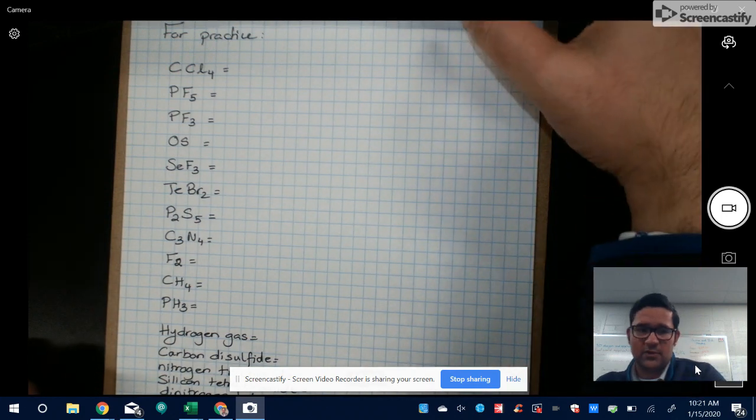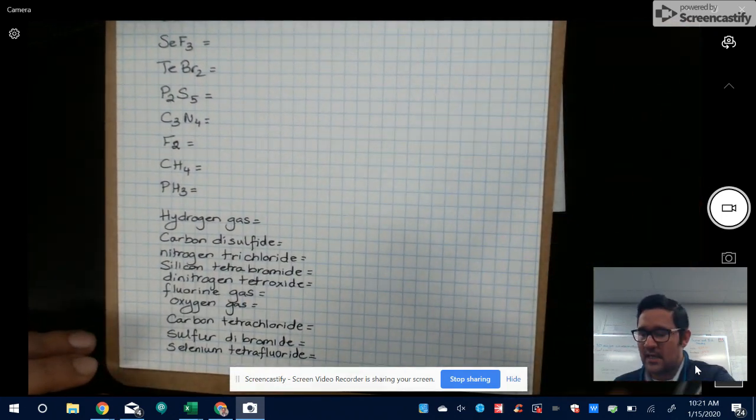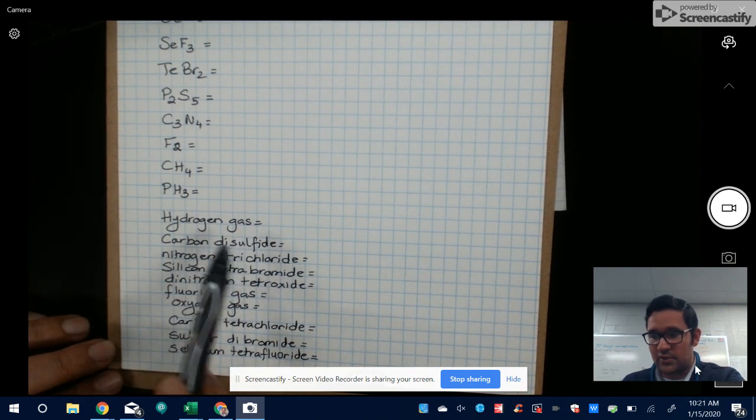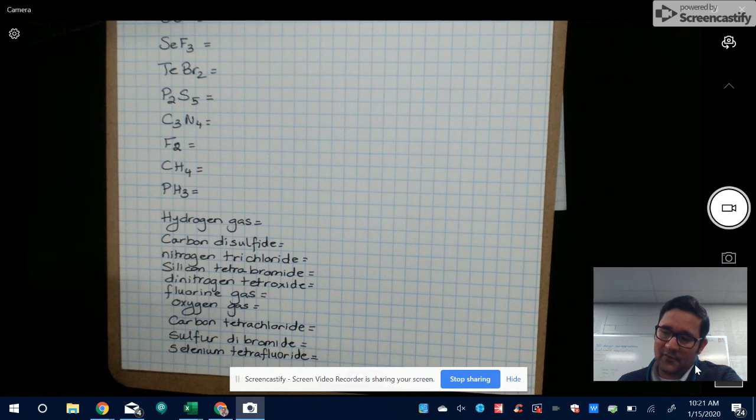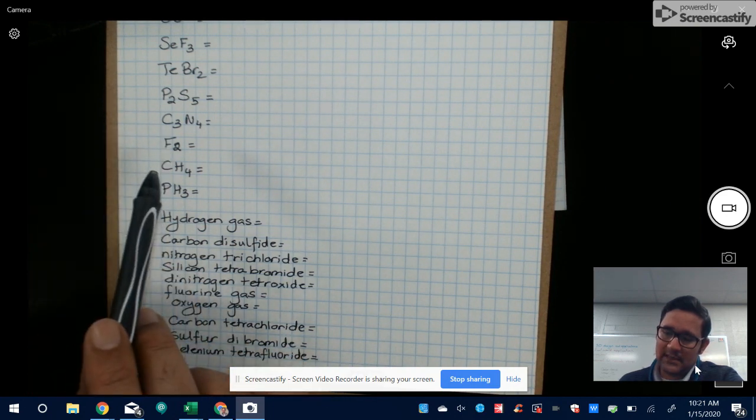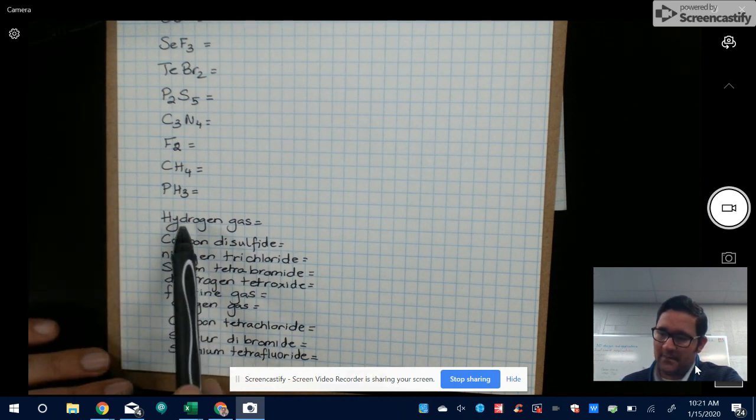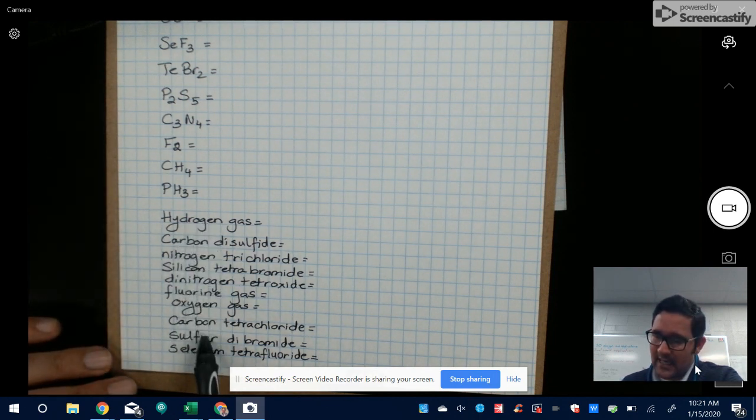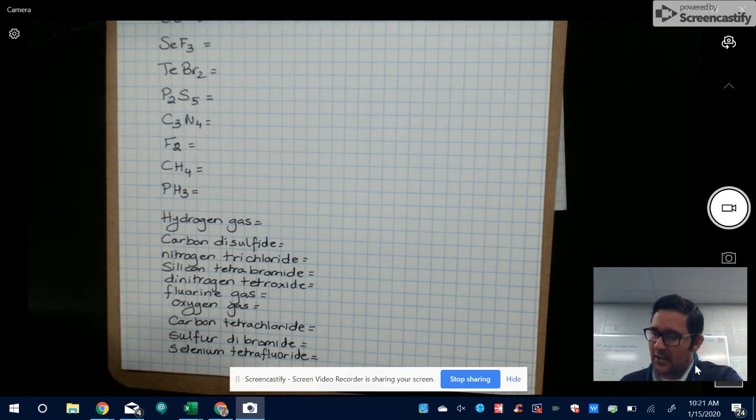And I also want you to go ahead and do the reverse. Just like we did for the ionic compounds, I'm giving you the name now and I want you to give me the formula. So over here I'm giving you the formula and I want you to give me the name of the compound. On the bottom, I'm giving you the name. I want you to give me what is the covalent compound formula.